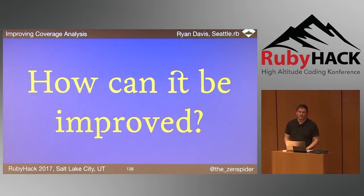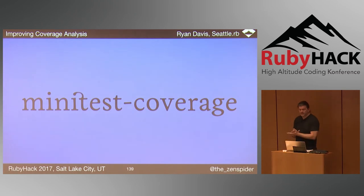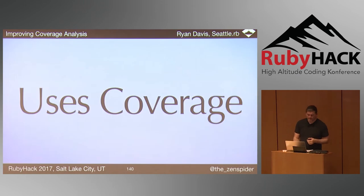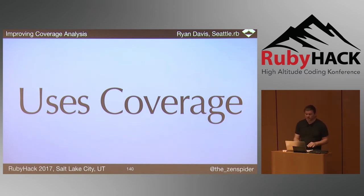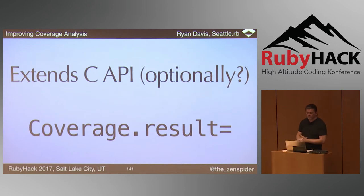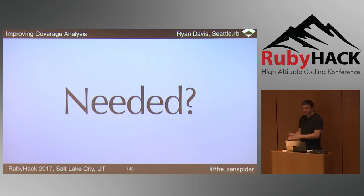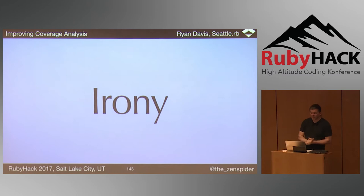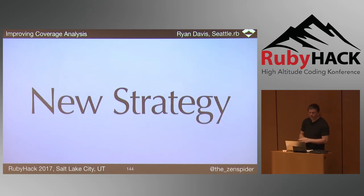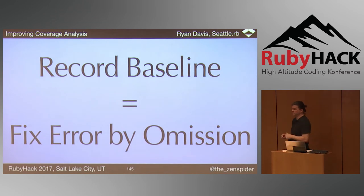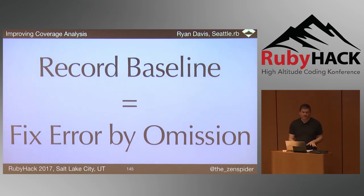I've created a gem called Minitest Coverage, released at RubyConf last November. It also uses coverage because I can't instrument bytecode directly yet, which means it can suffer from some of the same problems. But it does extend the C API to add a setter for coverage so we can reset the result. The first strategy change is to record a baseline for all of your implementation, not under tests — this addresses type 3 errors of omission.